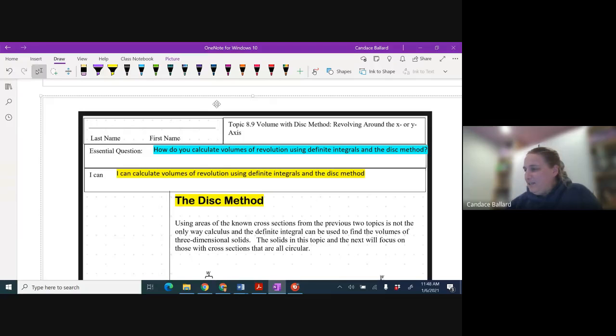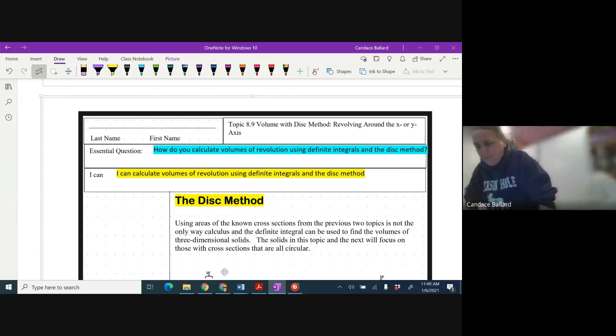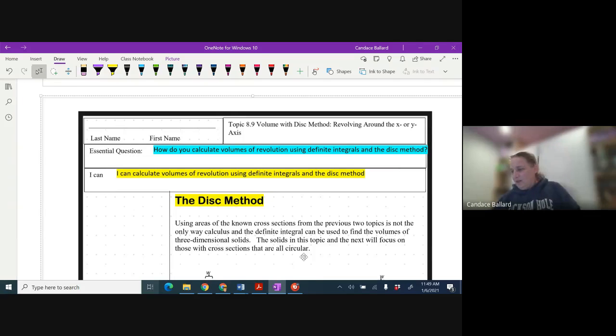So we are going to calculate the volumes of revolution using definite integrals and the disc method. So the disc method is basically instead of the cross sections being flat on the surface, we're going to rotate.